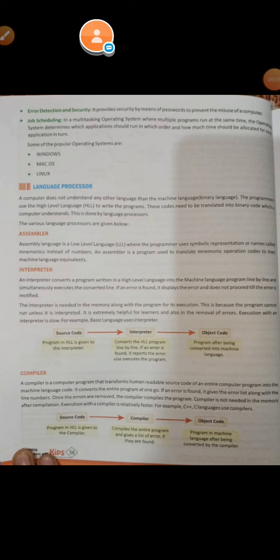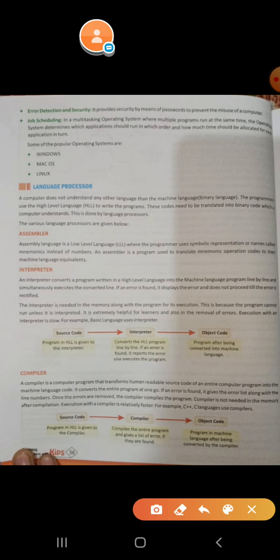For error detection and security, the operating system provides security by means of a password to prevent the misuse of a computer — we can set a password so that no one can misuse our computer. Lastly, for job scheduling: in a multitasking operating system where multiple programs run at the same time, the operating system determines which application should run in which order, and allocates time for each application.